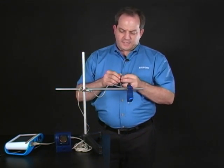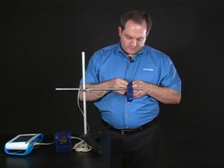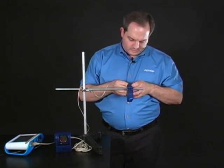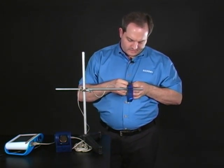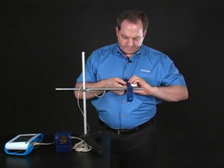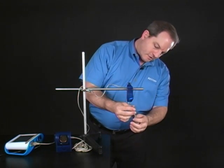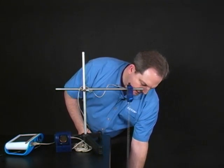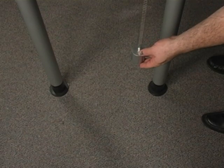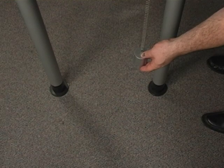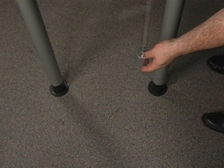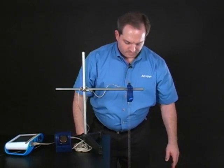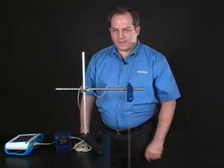I'm going to connect the mass to the spring first. Just take a second. Okay. And I'm going to attach that to my force sensor. I'm going to let that hang down until it is motionless or as close as I can get. Excellent. Okay. So now I have my hanging mass.